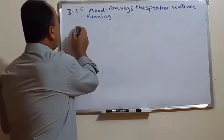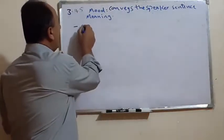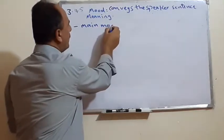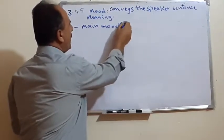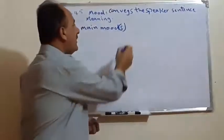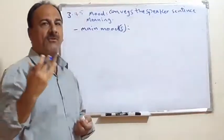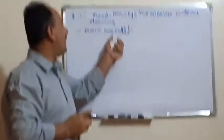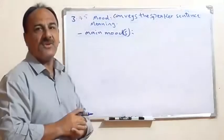The first category we can call the main moods. For the main moods, the meaning of the sentence — we have the first group, and it has three types.